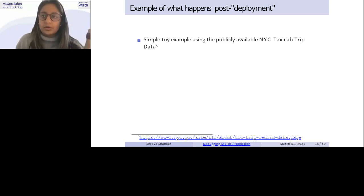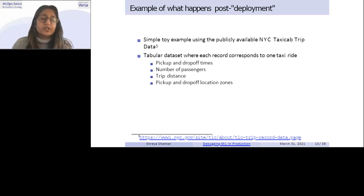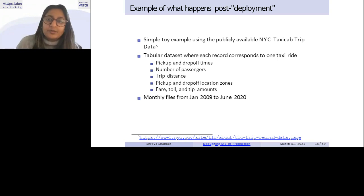So I will walk through now, I mentioned a lot of these challenges around like deployment, collaboration, and kind of like a fragmented pipeline, from both technical and people perspective. So, what happens, right, like, what's a real life example of like post deployment of an ML model, and where do some challenges come into play. So I'll talk about a simple toy example using the publicly available New York taxi cab trip data, and this code is available on my GitHub, as well as these slides. But this data set is basically a tabular data set where each record corresponds to a taxi ride, and the records have the following features or attributes like pick up and drop off times, number of passengers on that taxi ride. The trip distance, pick up and drop off locations, the fare, toll, and tip amounts, and it's stored in this public S3 bucket, in form of monthly CSVs from January 2009 to 2020. And there's a lot of data each month is about a gigabyte of data. So you have over a hundred gigs total.